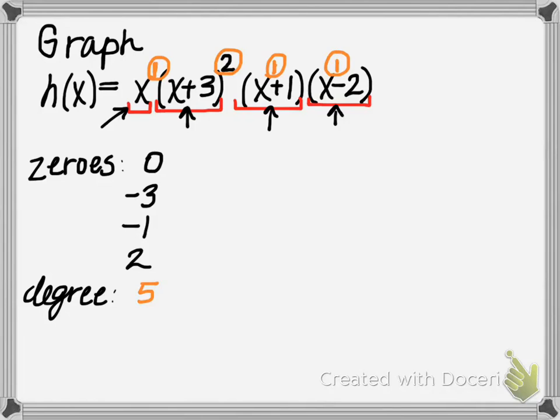So you'll notice again that the second factor here, the x plus 3, had that quantity squared, and that meant that we have a multiplicity. So this zero of negative 3 has a multiplicity of 2. I often just write mult, a multiplicity of 2.